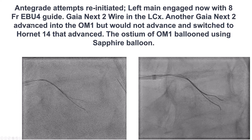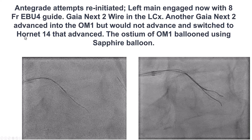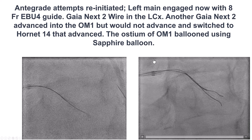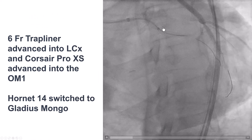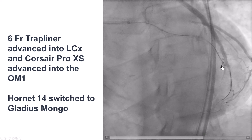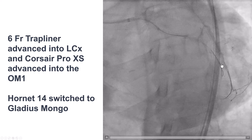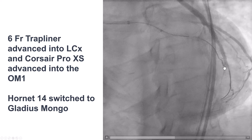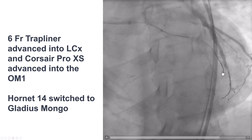We used a different guide catheter — initially a smaller guide, then an EBU-4 that provided much better support. We used a Gaia Nex wire, then increased penetrating power with a Hornet 14 that advanced inside the previous stent. We used a sapphire balloon for predilation, a Trapliner guide extension advanced into the proximal circumflex, and changed to a polymer-jacketed Gladius Mongo that advanced along the course of the vessel. The anatomy became much clearer — this is the obtuse marginal branch, with tenting of the native vessel from the bypass graft.